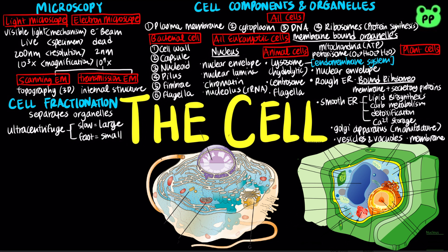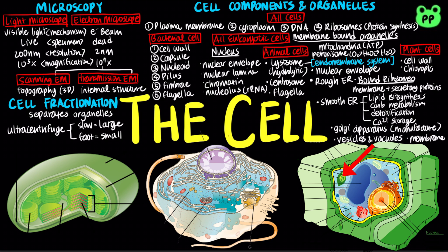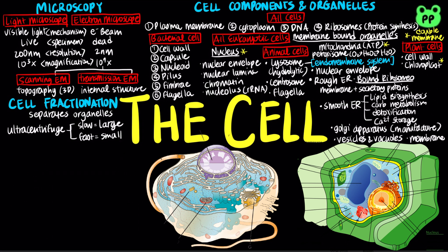Plant cells also contain some unique components not found in animal cells, including a cell wall composed of cellulose, which provides tensile strength and protection against mechanical and osmotic stress, functionally similar to bacterial cell wall. Plant cells also contain chloroplasts, which function in photosynthesis. Chloroplasts contain thylakoids, or membranous sacs stacked to form a granum, and stroma, which is the internal fluid. The nucleus, mitochondria, and chloroplasts all contain a double membrane, whereas peroxisomes contain a single membrane. A huge component of the plant cell is the central vacuole, which stores organic compounds and water.